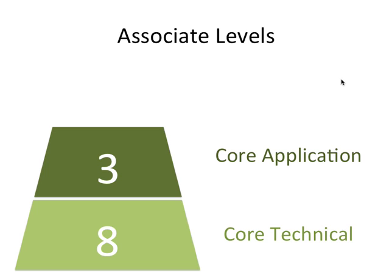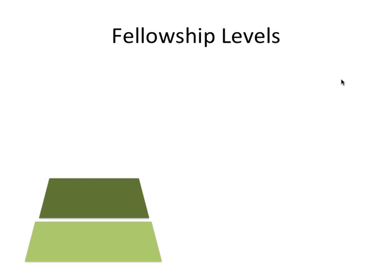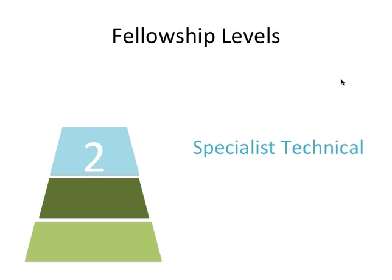Those are the 11 exams you have to do to become an associate actuary. If you want to become a fellow actuary and reach the fellowship level, there are two more levels. The first is the specialist technical exams — you only have to do two, but you have a choice from a variety of subjects. In my case I chose finance and general insurance, though you could also choose pensions, life insurance, health insurance, and a few more.